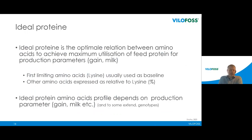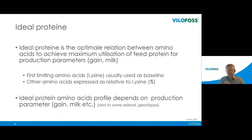Ideal protein is defined as the optimal relation between amino acids to achieve maximum utilization of feed protein for production gain or milk. In pigs, lysine is used as the baseline and other amino acids are expressed relative to lysine in percentage. The ideal protein amino acid profile depends on production parameters, stage of life, or even genotype — though at the genotype level we are in very small differences that can be difficult to handle in practical life.